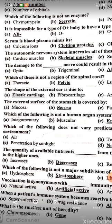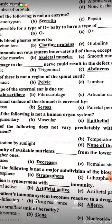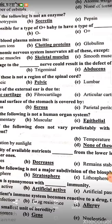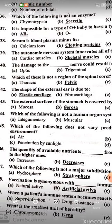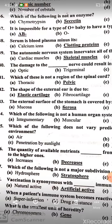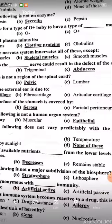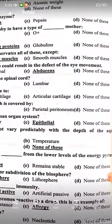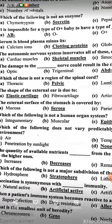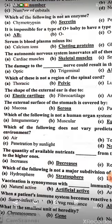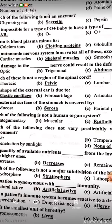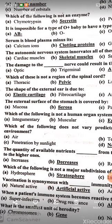The external surface of the stomach is covered by serosa. Which of the following is not a human organ system? Epithelial. Which of the following does not vary predictably with the depth of aquatic environment? None of these.